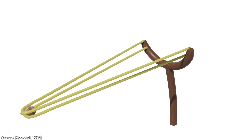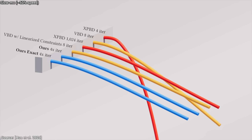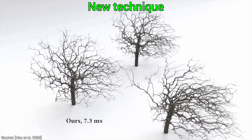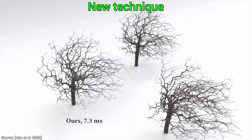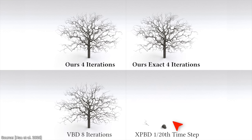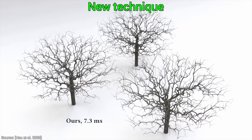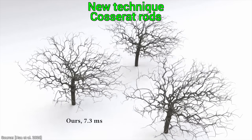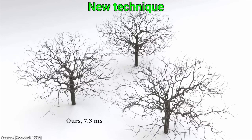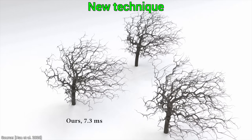Now I'll try to explain how it works — no AI is used here, only human ingenuity. This new technique uses what they call coseret rods. It is finally able to track every single spot along the branch, and for each spot it knows exactly how stretched, bent, and twisted it is. This is why the trees here look so great — every branch resists forces and twists just like in reality.